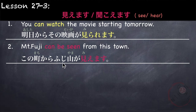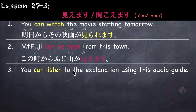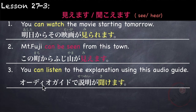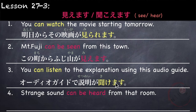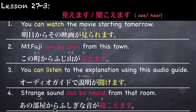この町から 富士山が見えます。For 聞きます (to listen): the potential form 聞けます is voluntary. For example: You can listen to the explanation using this audio guide — オーディオガイドで説明が聞けます。However, 聞こえます (to hear) is involuntary. For example: A strange sound can be heard from that room — あの部屋から 不思議な音が 聞こえます。This is involuntary.